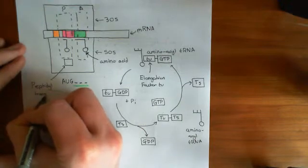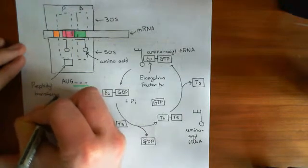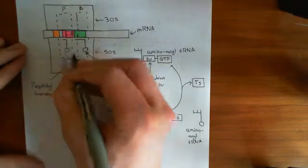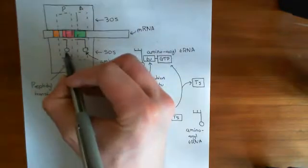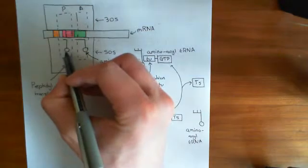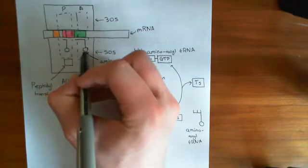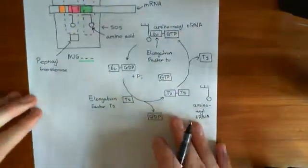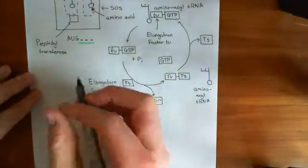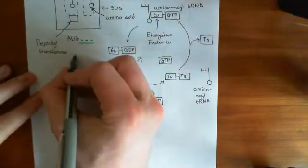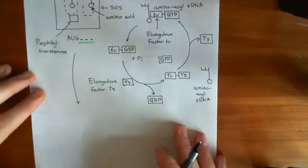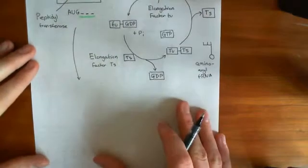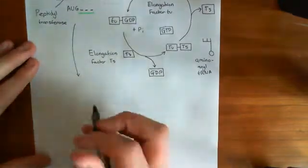What it will do is it will bind the carboxyl terminus of the amino acid here onto the amino terminus of the amino acid on here. So basically this enzyme is going to catalyse the formation of the peptide bond.